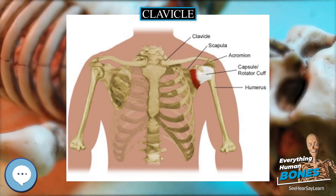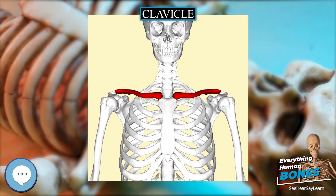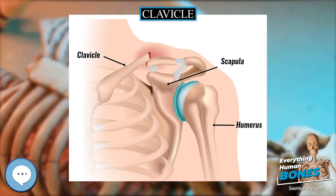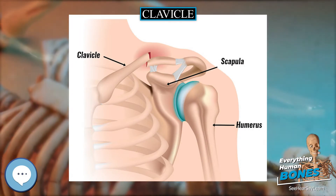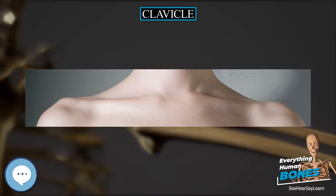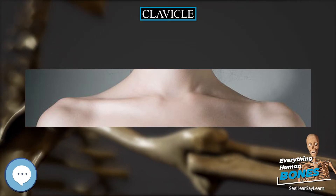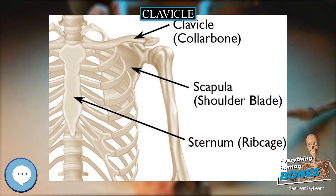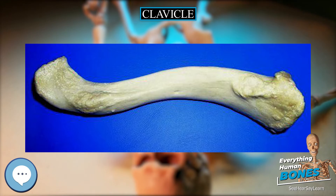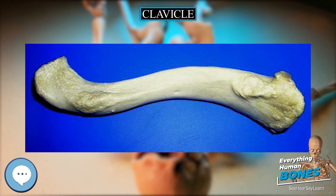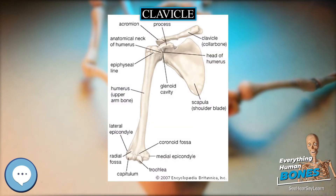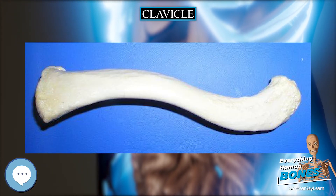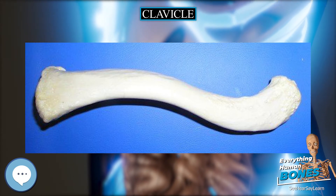The medial end, also known as the sternal end, is quadrangular and articulates with the clavicular notch of the manubrium of the sternum to form the sternoclavicular joint. The articular surface extends to the inferior aspect for attachment with the first costal cartilage. The lateral end, also known as the acromial end, is flat from above downward. It bears a facet that articulates with the shoulder to form the acromioclavicular joint, and the area surrounding the joint gives an attachment to the joint capsule. The anterior border is concave forward and the posterior border is convex backward.